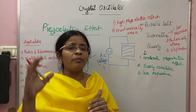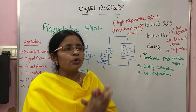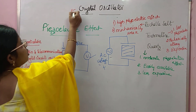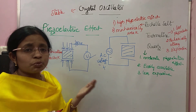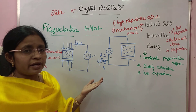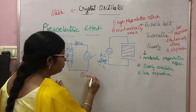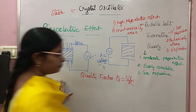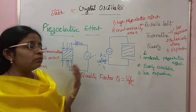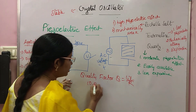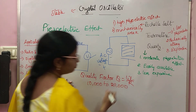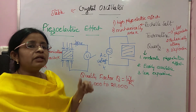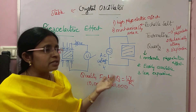Since RC and LC oscillators cannot generate a stable waveform under those changes, we go for the crystal oscillator — which is a very stable oscillator. Why is the stability more for a crystal oscillator? Because the quality factor is high. The quality factor is represented by Q and the formula is ωL/R. The quality factor of the crystal is 10,000 to 20,000 or even more. As the quality factor is high, it has more stability. The quality factor of all other oscillators is less, which is why they are not stable.